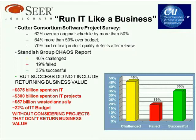You've probably seen a slide like this before — there's a crisis in IT. Cutter Consortium says about 62% of projects overran their original schedule by more than 50%, 64% were more than 50% over budget, and 70% had serious problems when released. And of course, everybody's seen the Standish information. Whether those numbers are perfect isn't really the point — the point is that we have problems in software, and I think everybody recognizes that. Software projects are in crisis in many ways.